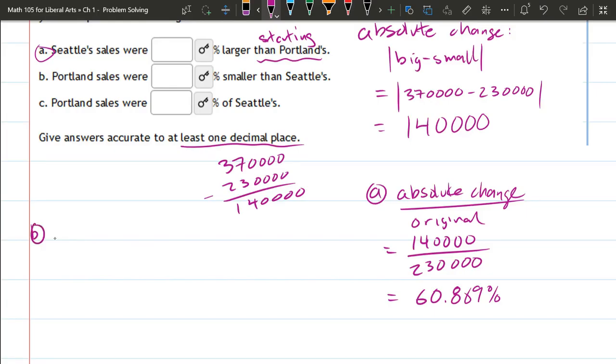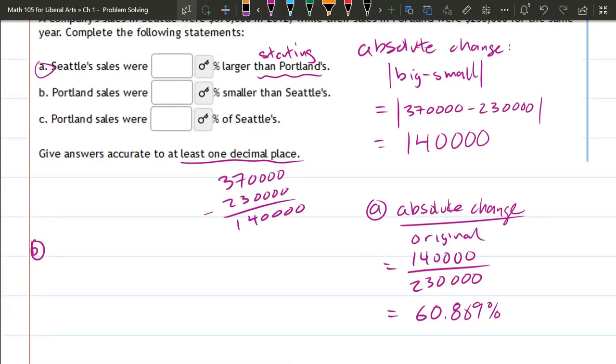Part B, how is part B different? It's similar. We're comparing Portland to Seattle. So in this case, this is the starting over here. So the original.